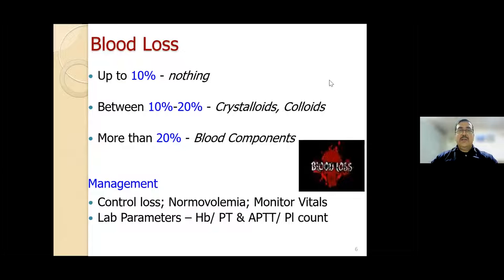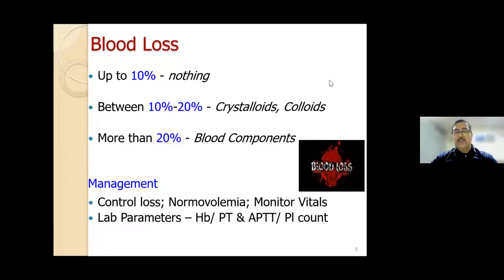Up to 10% of blood loss, nothing is required—in fact, when we donate blood as a donor, we donate almost 10%. Between 10% and 20%, crystalloids and colloids are good enough. Only when blood loss exceeds 20% do blood components have a role to play. Management involves controlling the loss, maintaining normal volemia, monitoring vitals, and taking lab parameters like hemoglobin, PT, APTT, and platelet counts along with the clinical picture when deciding upon treatment.